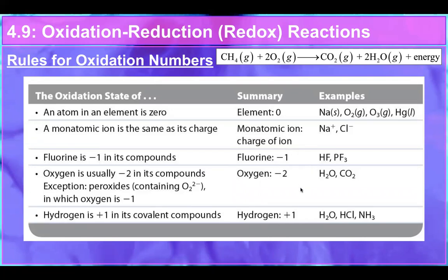Oxygen is almost always negative two unless it is bonded to fluorine, or unless it is in a peroxide molecule where oxygen is bonded to another oxygen — in that case it would be negative one. But almost always oxygen will be minus two. Anytime hydrogen forms a covalent compound with something more electronegative than it, it will be positive one.